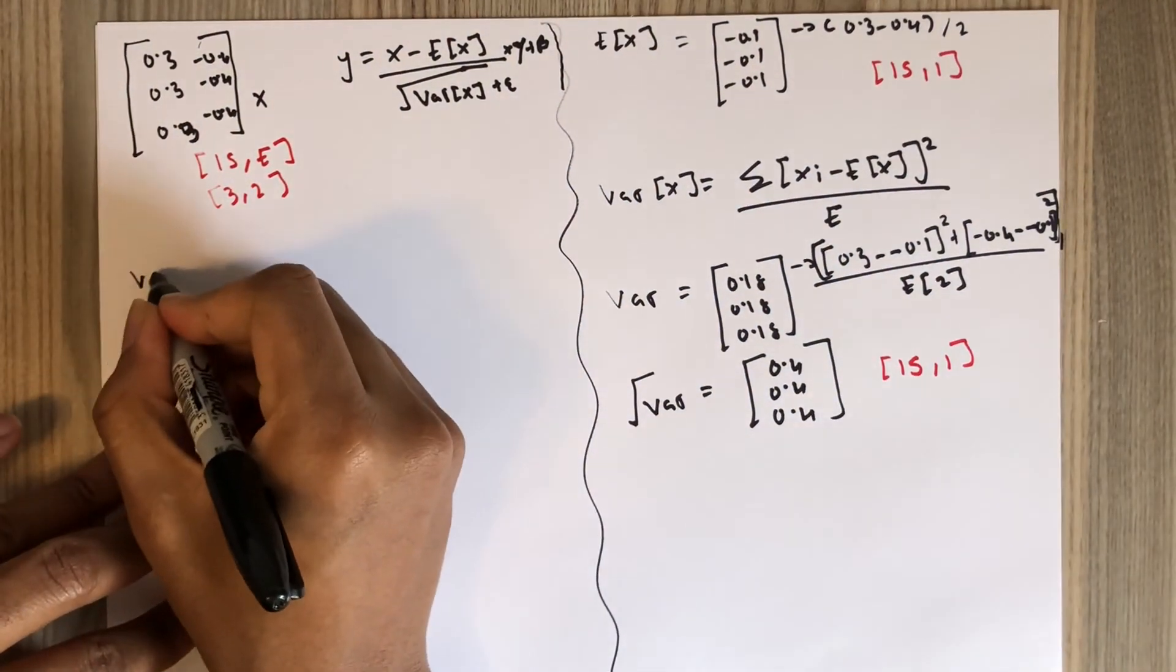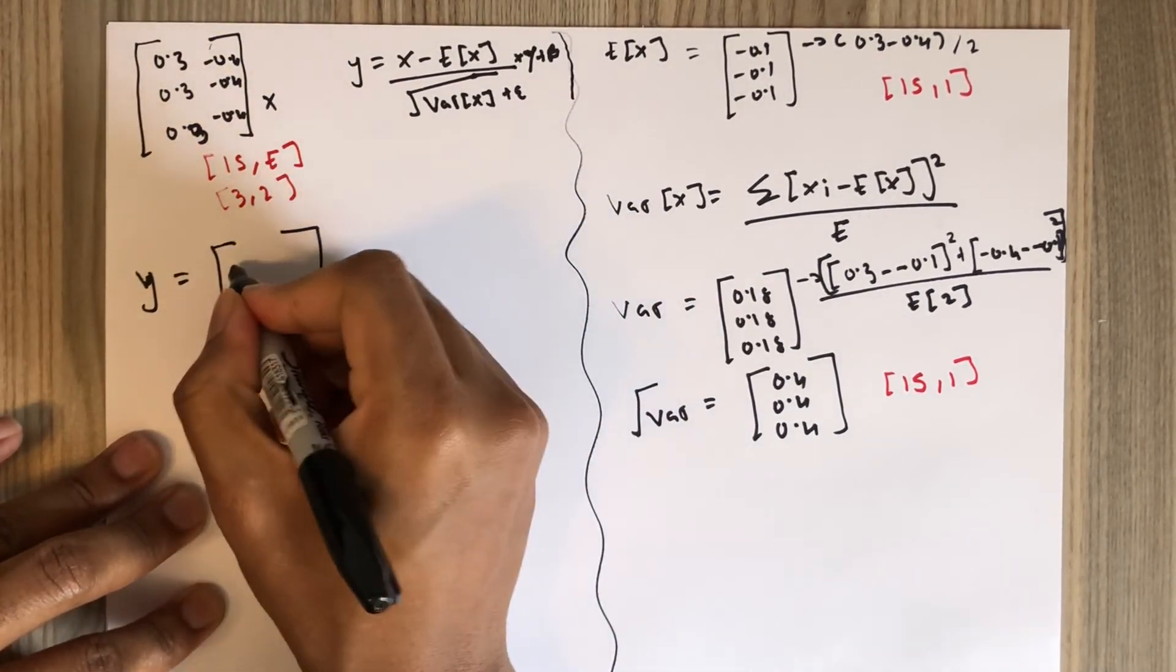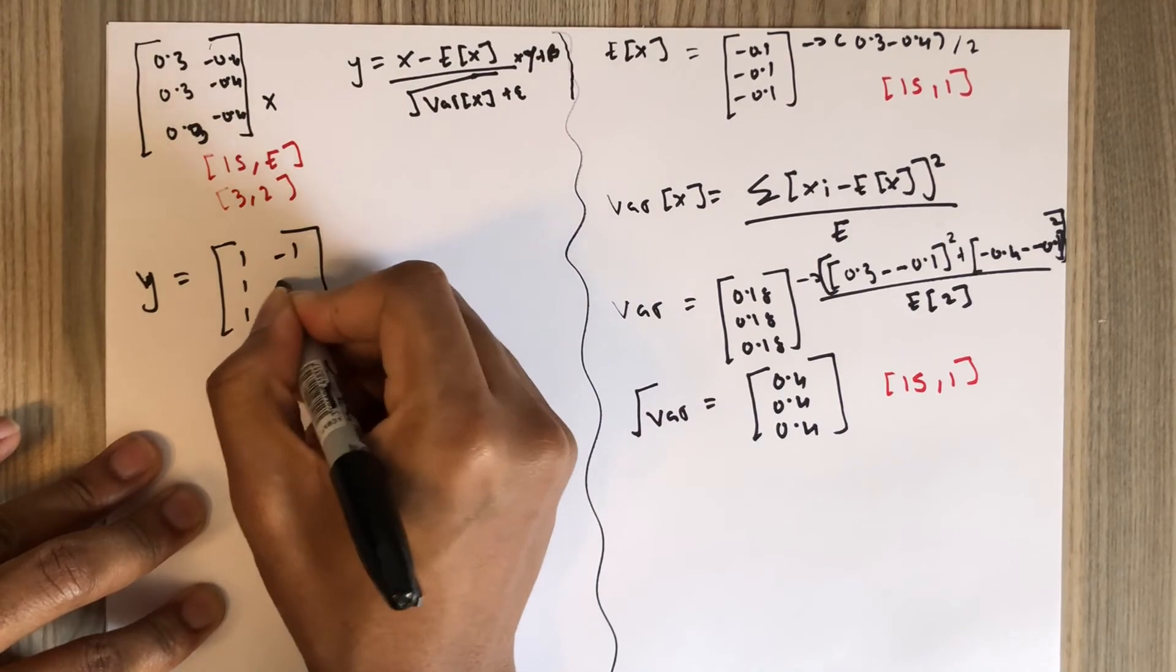After plugging it in, I got this result: 1, 1, 1, -1, -1, -1. The input dimension of layer normalization is the same as the output dimension.